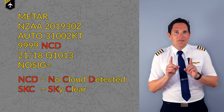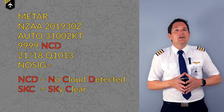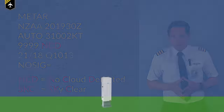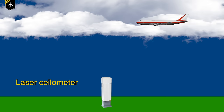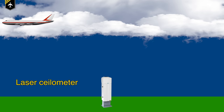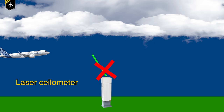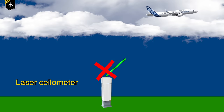I mentioned at the start of the video that a laser pointer was relevant to the METAR, and this is where it comes to use. The laser ceilometer is an instrument which uses infrared laser light to accurately detect cloud type, base height, and thickness automatically, but due to its requirement for precise calibration, does not rotate or detect cloud other than what is directly above the sensor.